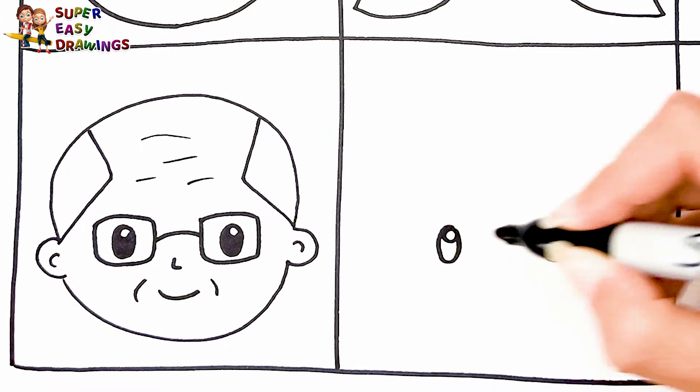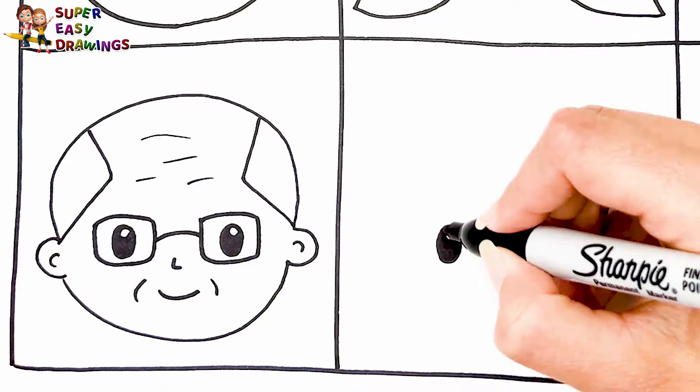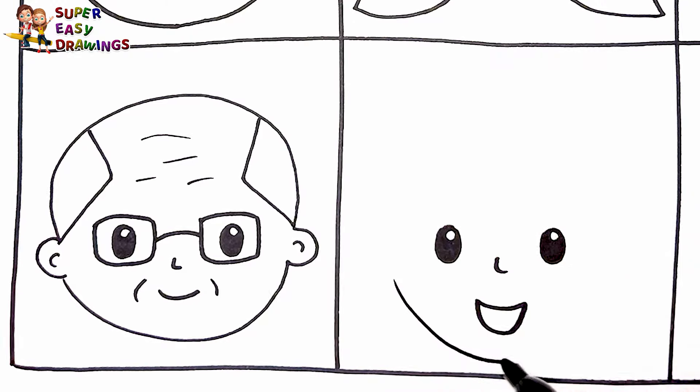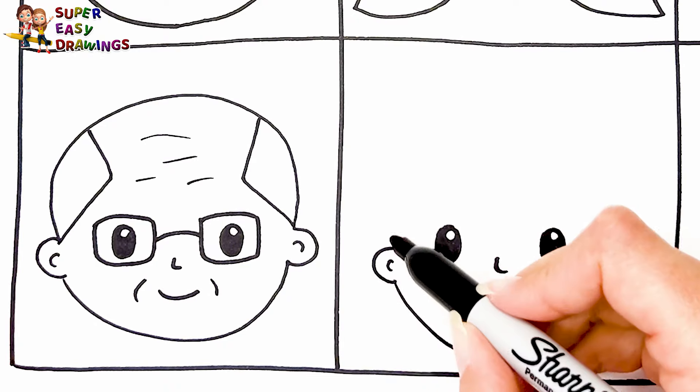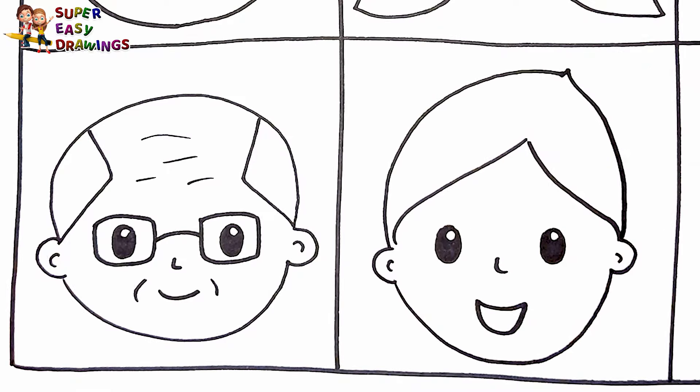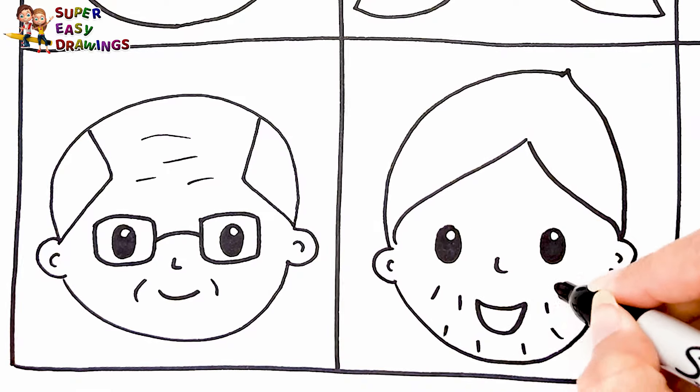Next to him, let's draw the dad. I draw his eyes, his nose and his mouth, his ears and his face. Then I draw his hair and some small lines for his beard.